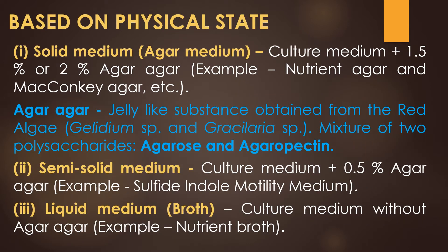Based on physical state, culture media are categorized into three types: solid medium, semi-solid medium, and liquid medium. The solid medium with 1.5% to 2% agar agar — examples for solid medium are nutrient agar and MacConkey agar.